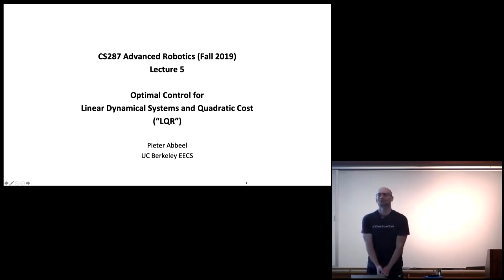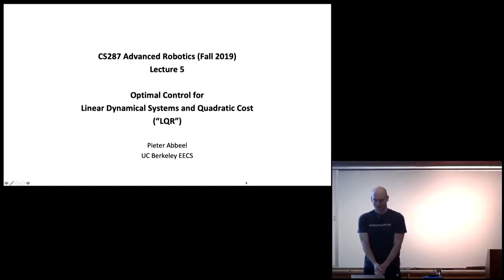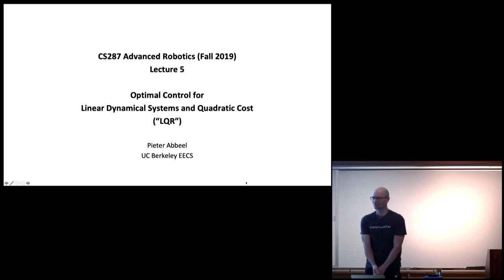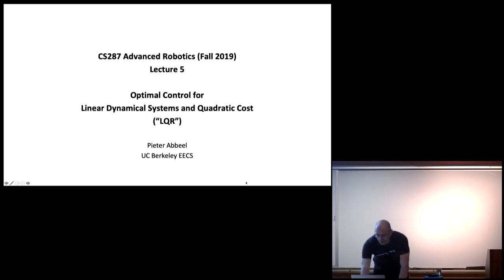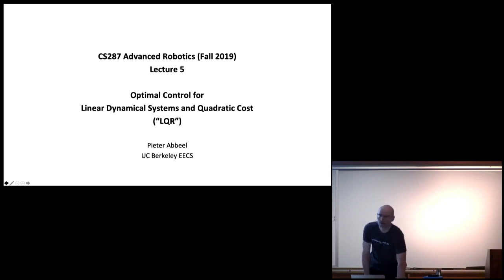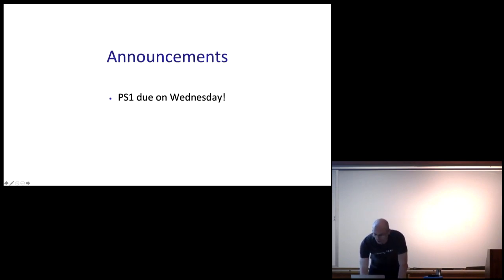Hi everyone, welcome to lecture 5 of CS 287, Advanced Robotics. Today we'll cover optimal control for linear dynamical systems and quadratic cost, which at first might sound a little narrow, but you'll see it's actually quite general. Your homework one is due on Wednesday, so you have a little less than a week left to complete it.